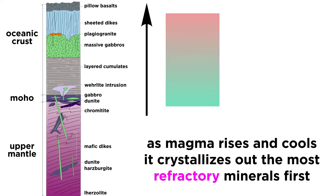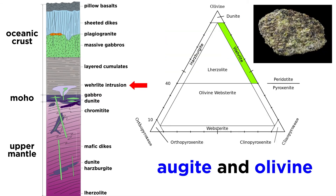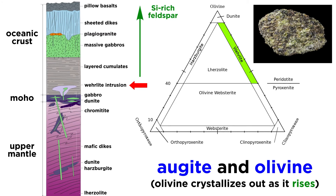As magma rises, it cools and crystallizes out the most refractory minerals first, which causes the magma to change composition as it rises, becoming more felsic, or rich in silica. This process is called differentiation. Wherlite is rock composed mainly of augite and olivine, and as it rises, much of the olivine crystallizes out, leaving behind a more silica-rich melt that eventually forms the basaltic feldspar-rich pillow lavas of the ocean floor.